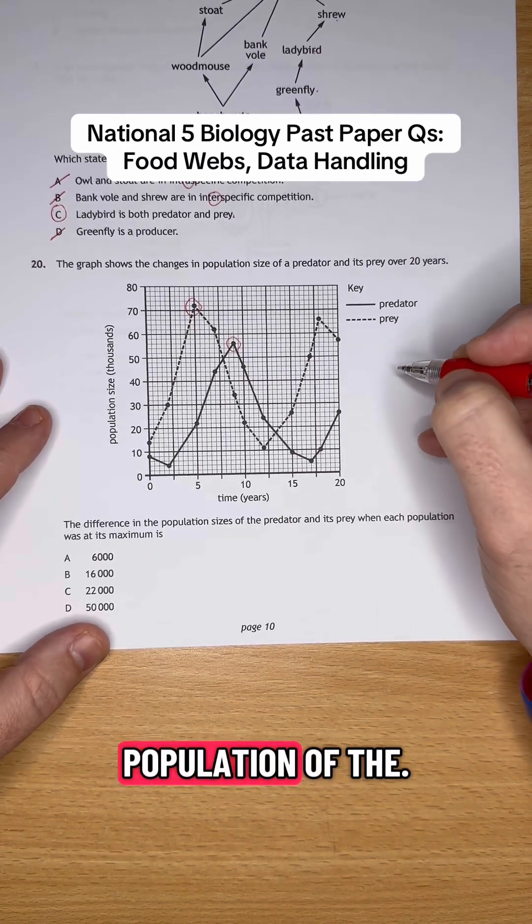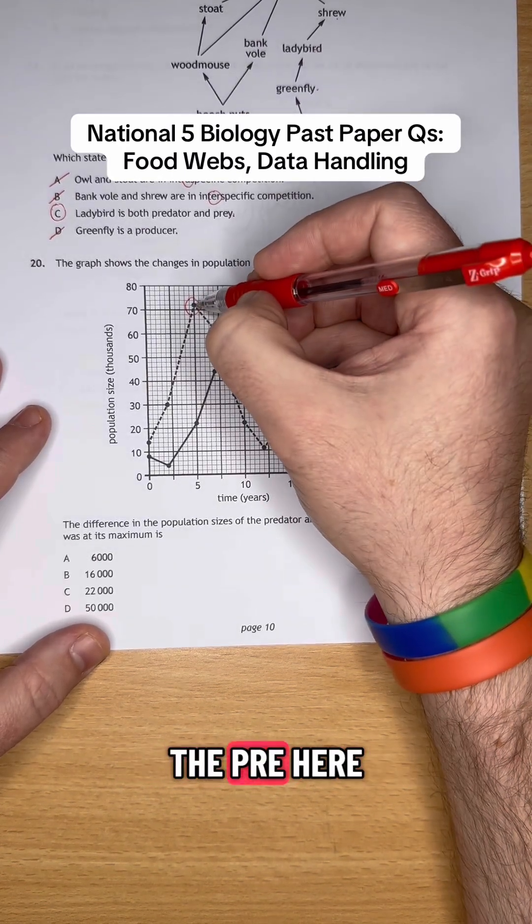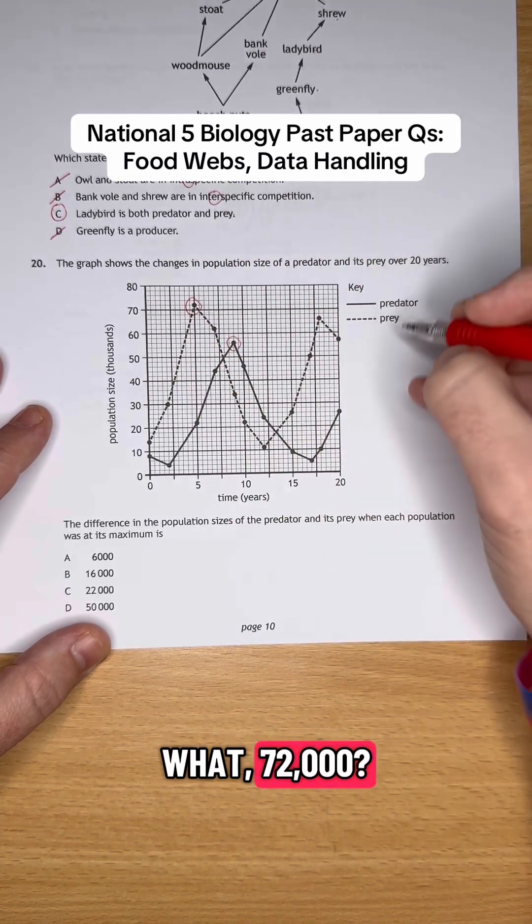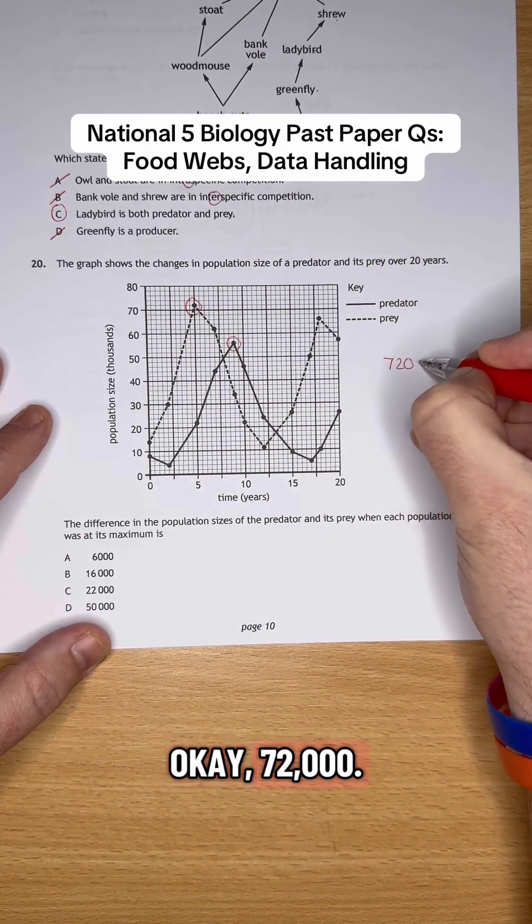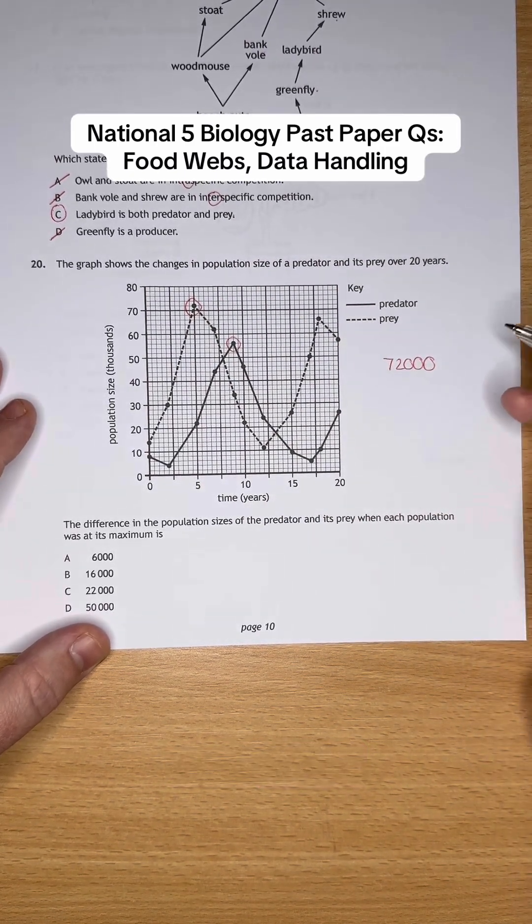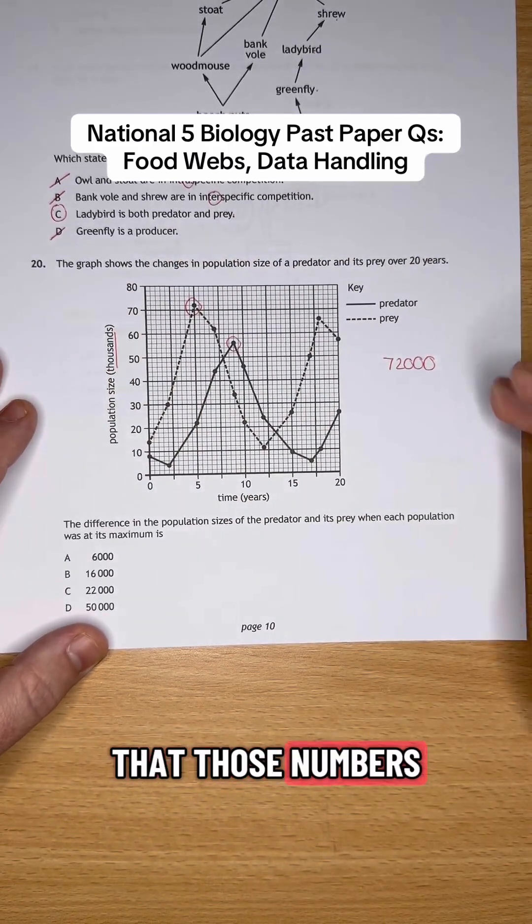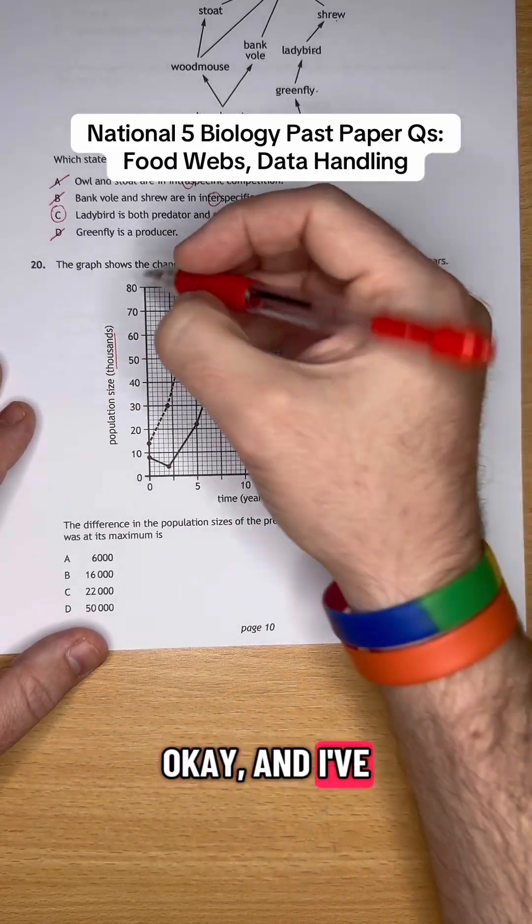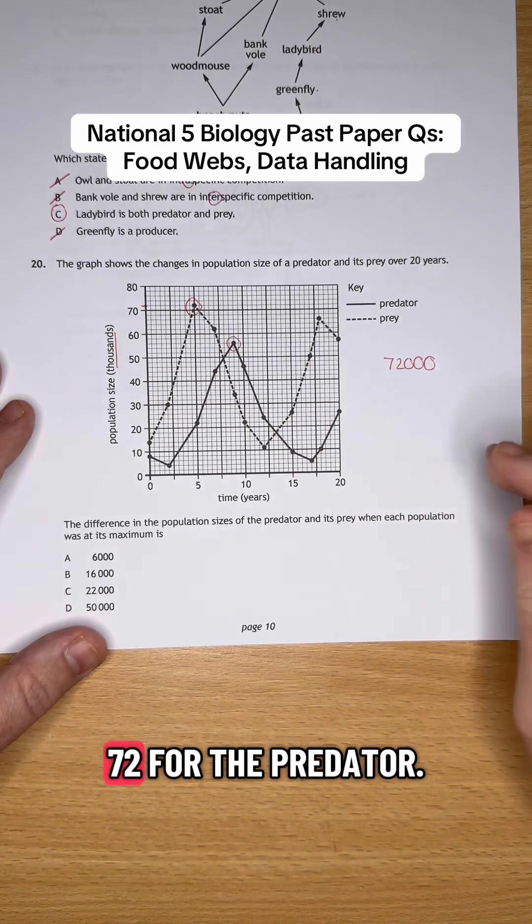So the population of the prey here is going to be 72,000. Okay, 72,000, because if we look at the scale, it tells us that those numbers are in thousands, and I've read it off here as being 72.